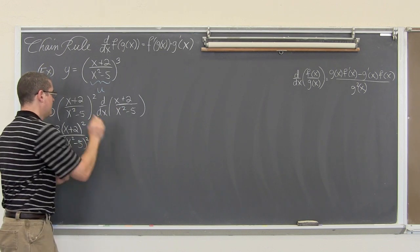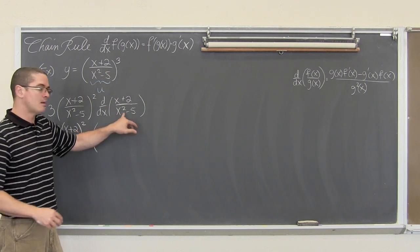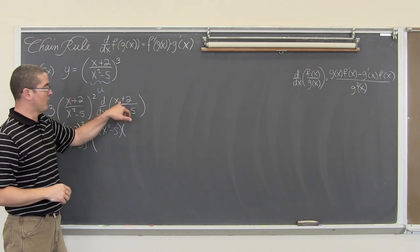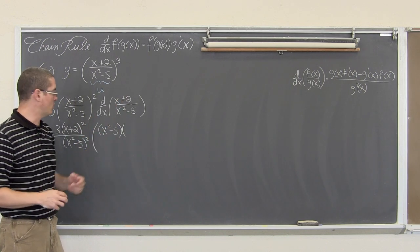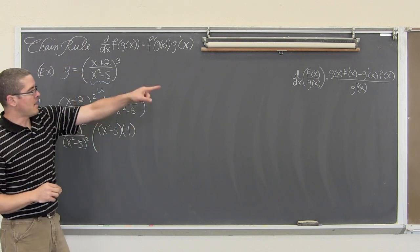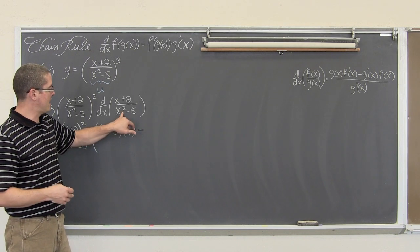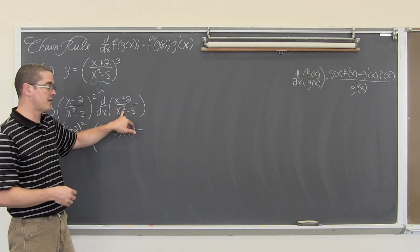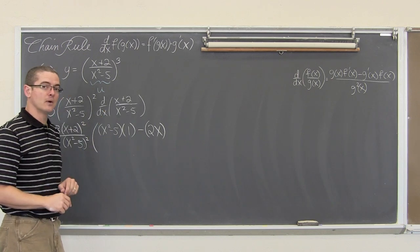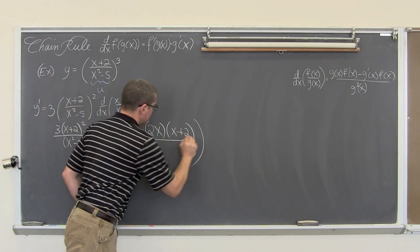The derivative of x plus 2 over x squared minus 5, using the quotient rule, is: take the denominator, x squared minus 5, multiplied by the derivative of the numerator. The derivative of x plus 2 is simply 1. Minus g prime of x — the derivative of the denominator — which gives 2x, times the numerator x plus 2, all over the denominator squared.